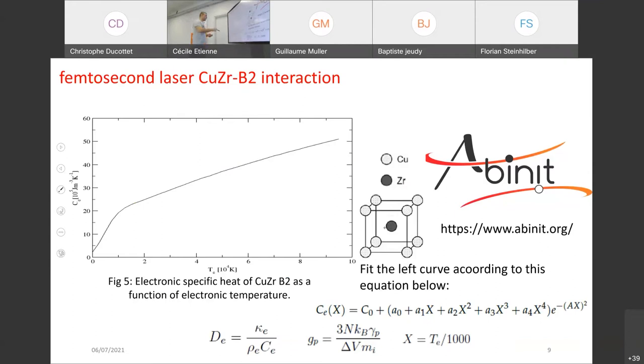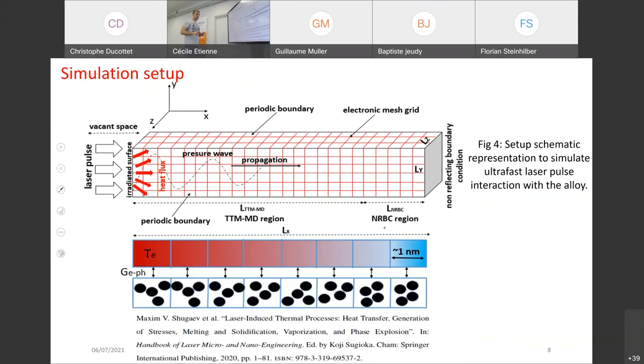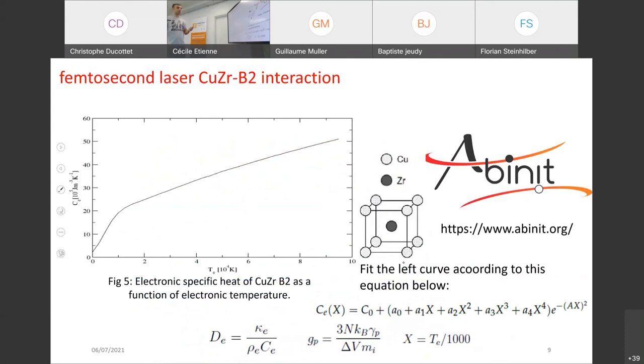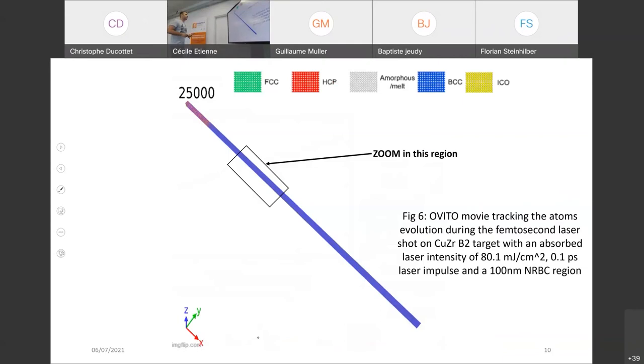Here I presented the first result that we have gotten to compute. To manage this simulation, you have to compute these three parameters: CE, kappa E, and GP. There are two main ways to do it. The first way is ABINITIO simulation, as we did it here using ABINITIO software. Or you can use experimental data if they are available. To inject the electronic-specific heat in our model, we'll use this equation over here. You'll fit this ABINITIO curve with this equation. Once we fit it, we just collect C0, IA0, I1, I2, and inject them in the script. For the other properties, you can just use these equations.